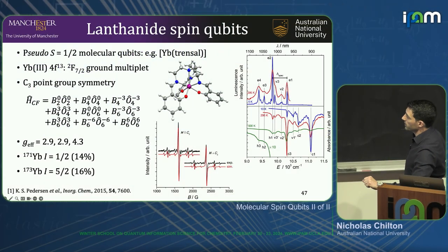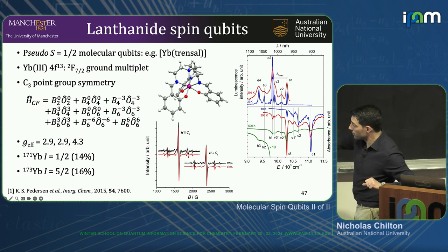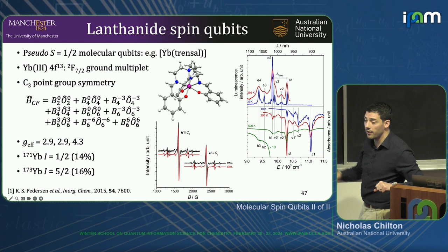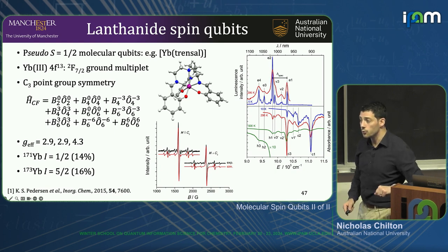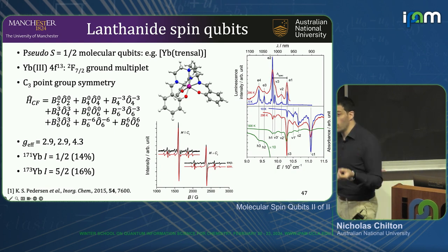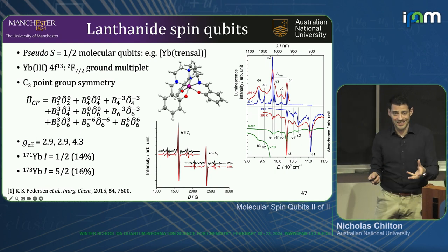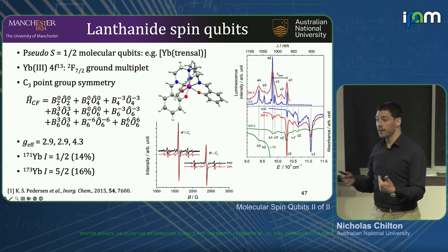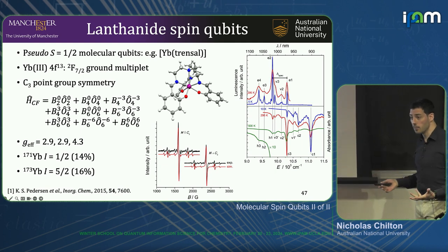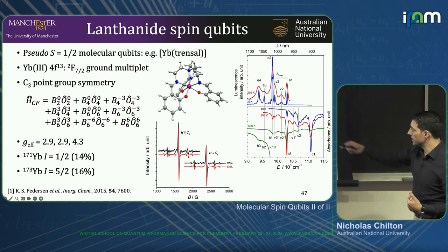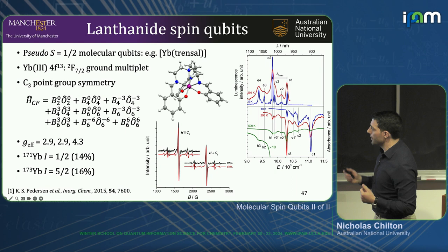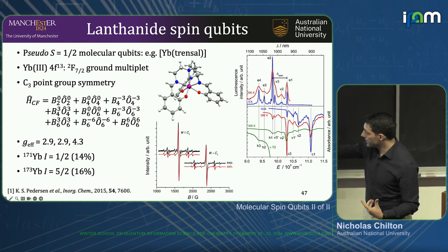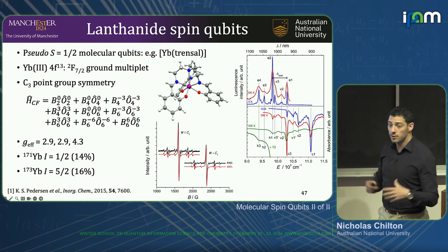If you do EPR spectroscopy at very low temperatures, you can measure the effective G values of this ground pseudo spin-1/2. You can see that the G values are very, very far from 2, because this is not a pure spin state — it is some linear combination of MJ projections, thanks to the reduction of symmetry. The total angular momentum states are all mixed up, but in a well-known way, giving rise to effective G values that can be quite extreme.